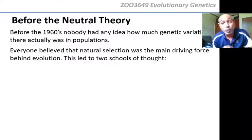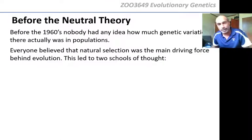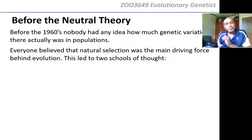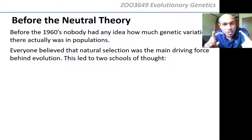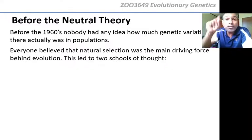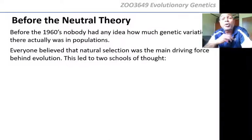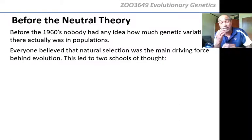The structure of DNA wasn't even known by that stage — Watson and Crick and so on. Not much was actually known about DNA or genetic variation. In light of this, where we didn't know how much variation was really in the genome, everybody believed that natural selection was the main driving force behind evolution — the main force changing allele frequencies in a population from one generation to the next.